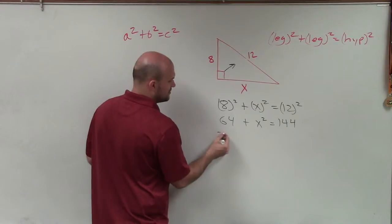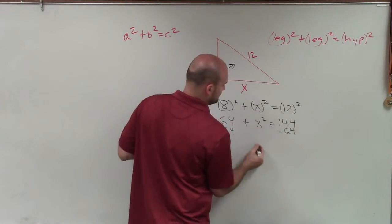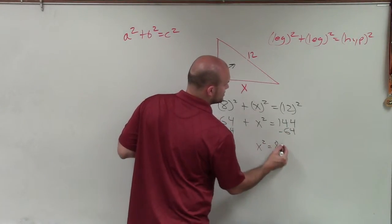Now I need to solve for x squared. So I'll subtract 64 on both sides. And therefore, I get x squared equals 80.